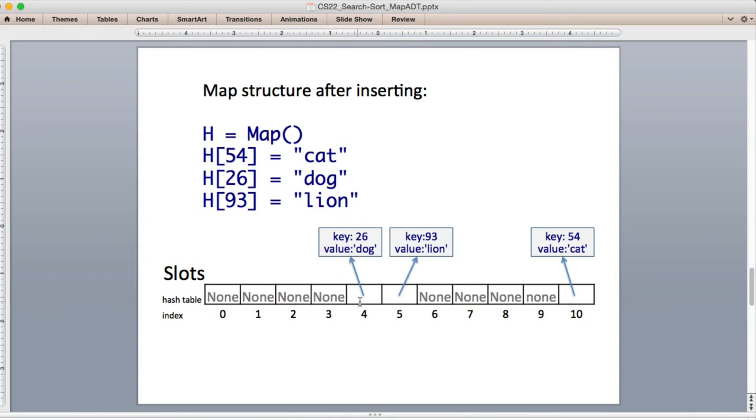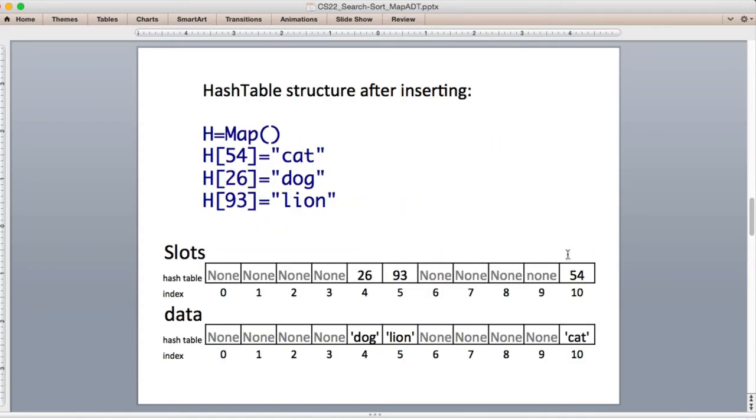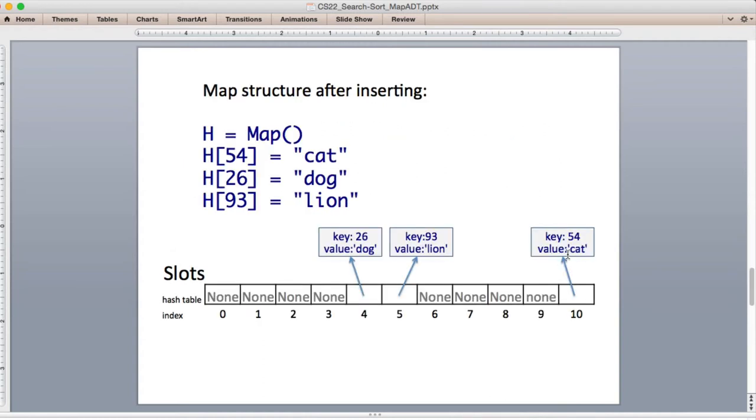And whenever you have a piece of data that exists, instead of none, it points to this object that we created, which has a key and a value. So here after we've inserted these three objects, this structure here is equivalent to this. It's just a different way of doing it. I like this structure because it's a little cleaner and it's a little more object-oriented approach.